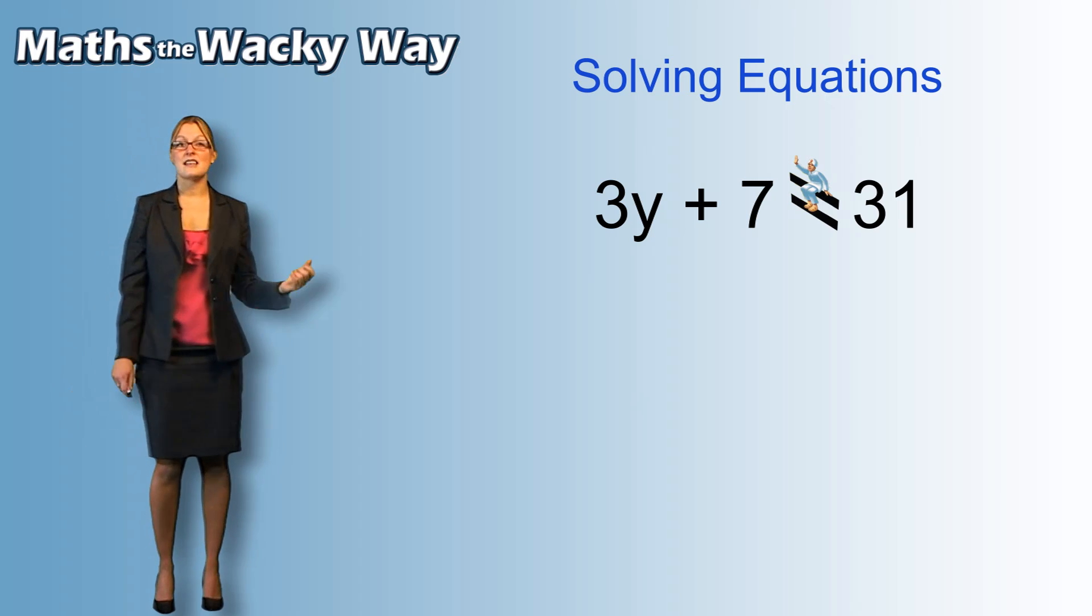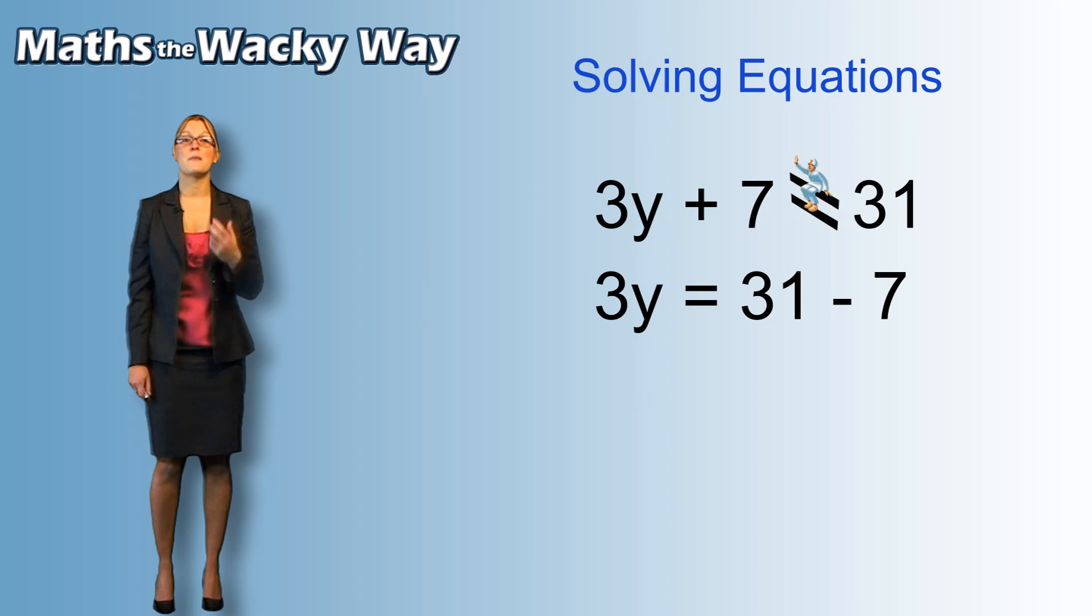So let's go through that with this example. We've already said the 7 is going to move. Now the 7 is currently adding, so it's going to go to the other side and it's going to become a subtract. That then gives us 3y equals 31 take away 7.